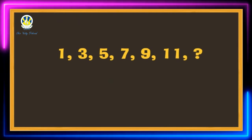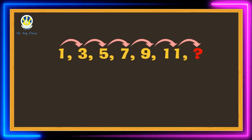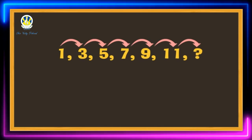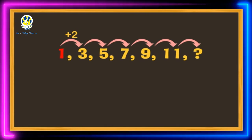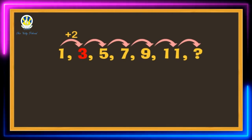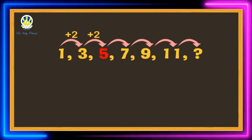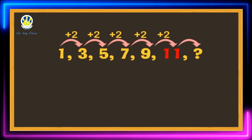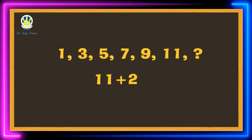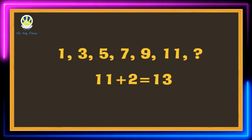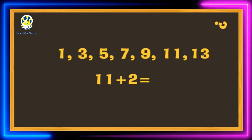Let's look at some more examples. Here is a number pattern — look at the sequence of numbers, can you guess the next number? Start from 1 and add 2 each time: 1 plus 2 equals 3, 3 plus 2 equals 5. Keep adding 2 each time — the next term will be 11 plus 2 equals 13. Once you understand the pattern, you can easily write the next digit to complete the pattern.